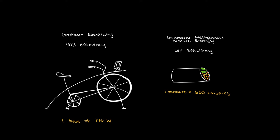If one hour of consistent pedaling of this bike produces 175 watts, how many times could you charge your phone with one hour of pedaling and how many burritos, which are 600 calories each, would you need to eat to create this energy?